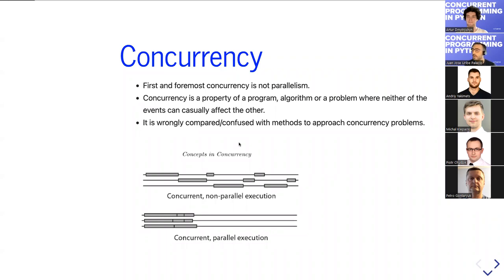Concurrency is the property where neither of the events can causally affect the other. For example, if you have a user interacting with a UI — pressing buttons and clicking parts of a browser screen — those events can interact and affect each other. This is a property where things happen in an almost simultaneous fashion.